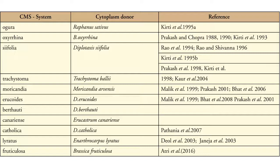Coming to cytoplasmic sources of CMS: Ogura (donor Raphanus sativus), Oxyrrhina (donor Brassica oxyrrhina), Cypholia (donor Diplotaxis cypholia), Trachistoma (donor Trachistoma valley), Morikandia (donor Moricandia arvensis), Erechoides (donor Diplotaxis erechoides), Berthoti (donor Diplotaxis berthoti), Canariensis (donor Erucastrum canariense), Catholica (donor Diplotaxis catholica), Letherus (donor Anarthrocarpus lethaea), and Fruticulosa (donor Brassica fruticulosa). Among these, Ogura, Trachistoma, and Morikandia are the most popular.